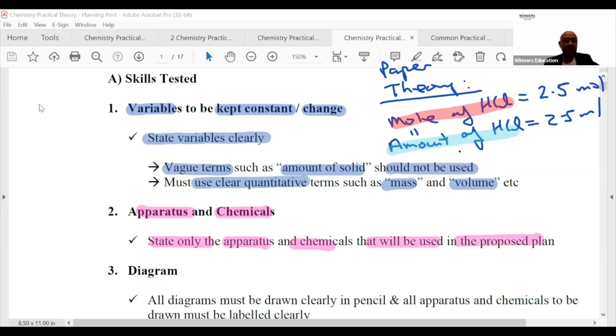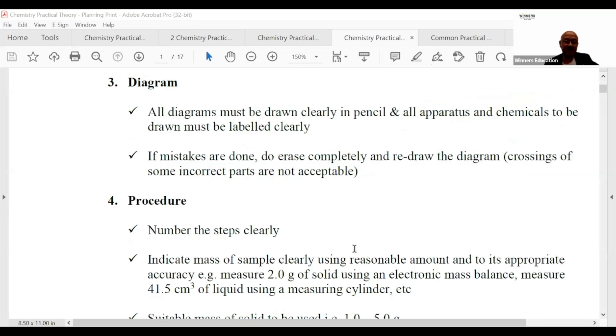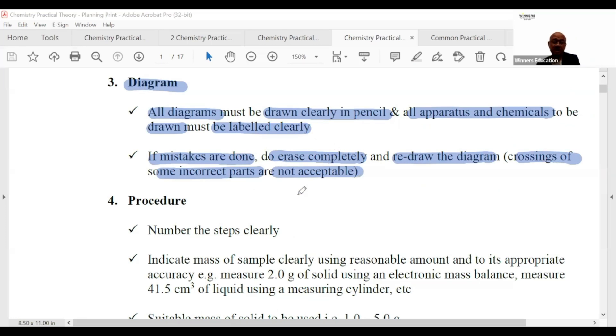All diagrams must be drawn clearly in pencil, and all apparatus and chemicals must be labeled clearly, like what I've been doing the last two days. If mistakes are done, erase completely - never redraw the diagram. Crossing out incorrect parts is not acceptable. That's why it must be in pencil.